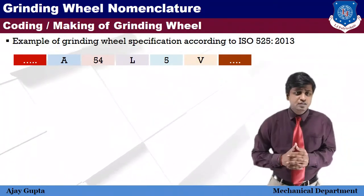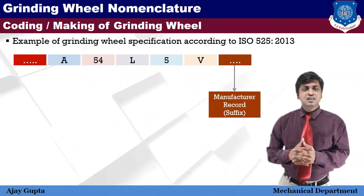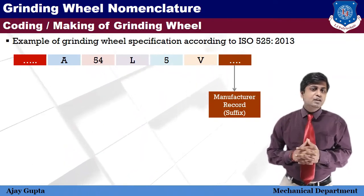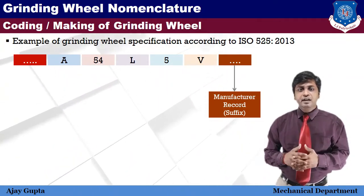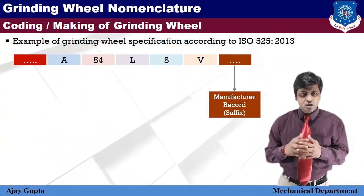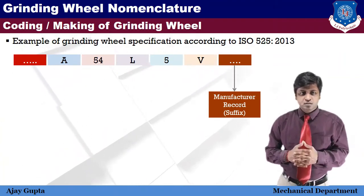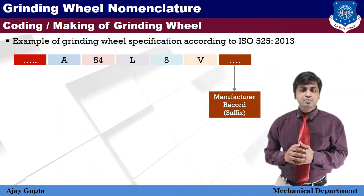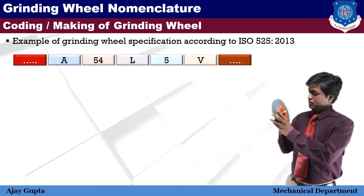The seventh and last symbol is the manufacturer record, also known as suffix. Two-digit numbers are used for this symbol. It is defined and followed by the manufacturer for their own record and is also optional, depending on the manufacturer.